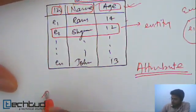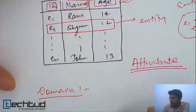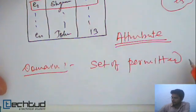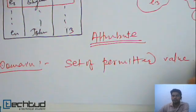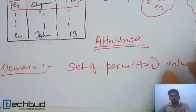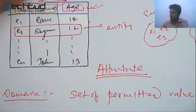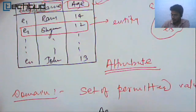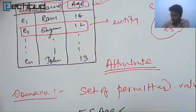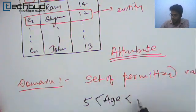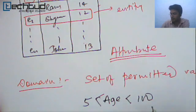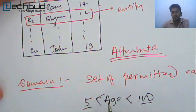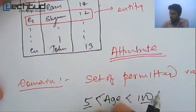Another one is domain. Domain is the set of permitted values for an attribute. If you consider this age here, if you have a constraint like you want to put age should be greater than 5, and for this particular institution you want to allow senior citizens to study also, in that case the age will be less than 100. So the student will have age greater than 5, less than 100. So the set of permitted value is greater than 5 and less than 100. This is the domain of age.